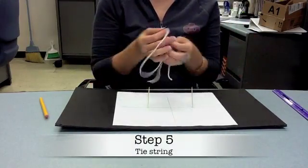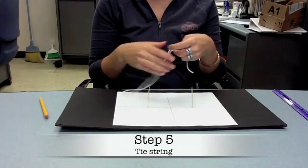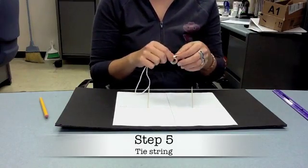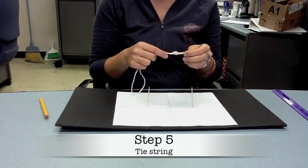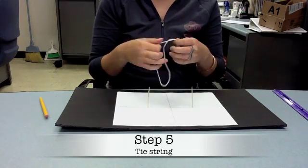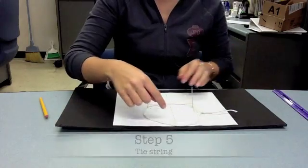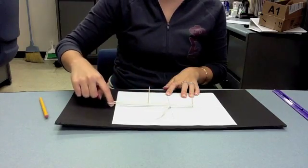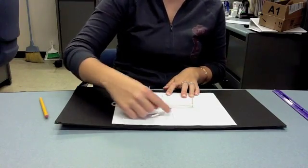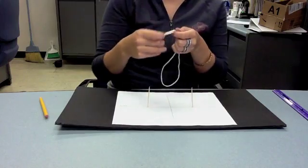Now we're going to take the string and tie it so that we can make a loop. You want to make sure that your loop isn't too long or too short. If it's too long, when you wrap it around your toothpicks, the string is going to end up going off the graph paper. We don't want that. So I'm going to make my string a little shorter.